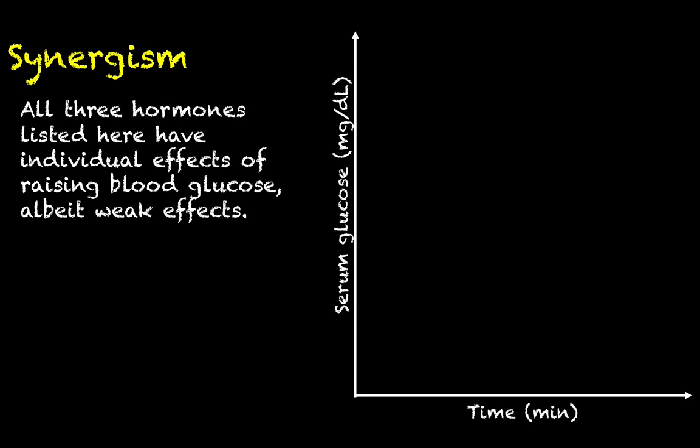Let's look at that first example of cortisol, epinephrine, and glucagon. The graph shown here has serum glucose in milligrams per deciliter on the y-axis and time in minutes on the x-axis. We are going to see the effect that the injection of each of those three hormones has on the levels of glucose in the blood. All three hormones are going to individually have effects on raising the blood glucose.